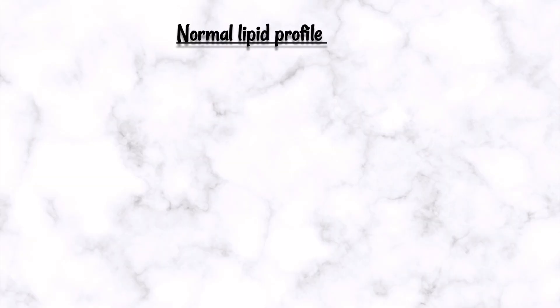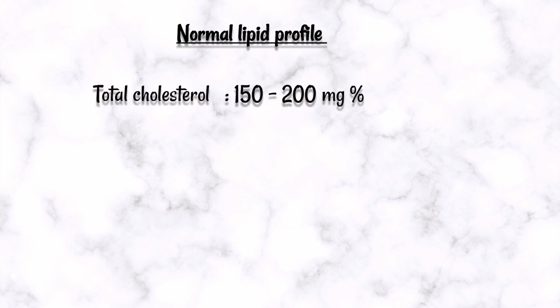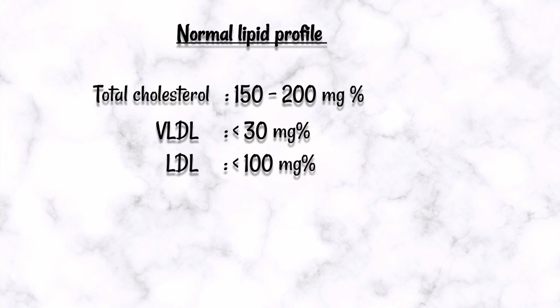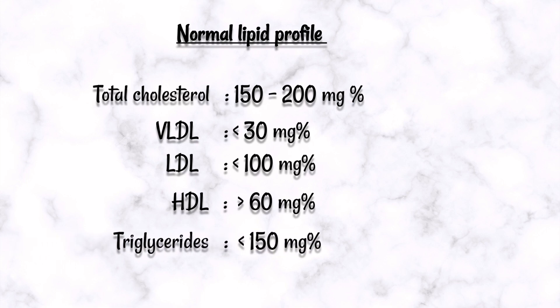This is the CHOD-PAP method of serum cholesterol estimation. Normal values are: total cholesterol 152–200 mg%; VLDL cholesterol 10–30 mg%; HDL cholesterol 60 mg%; and triglycerides 150 mg%.